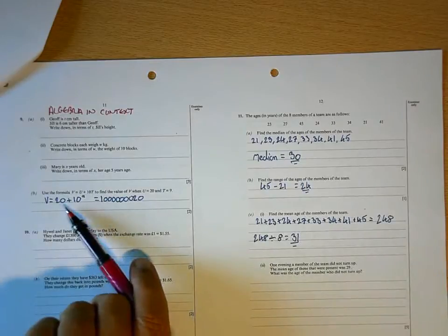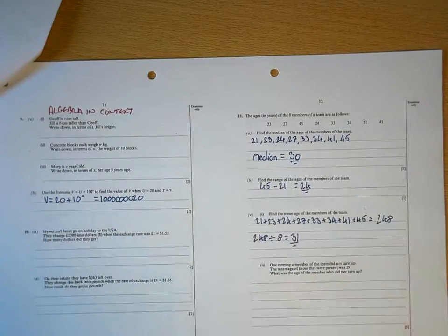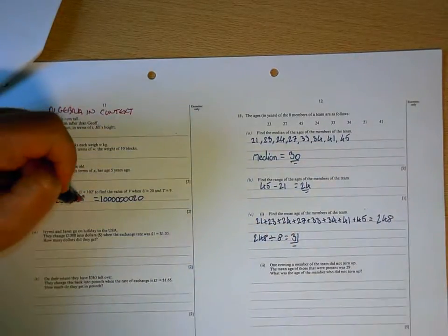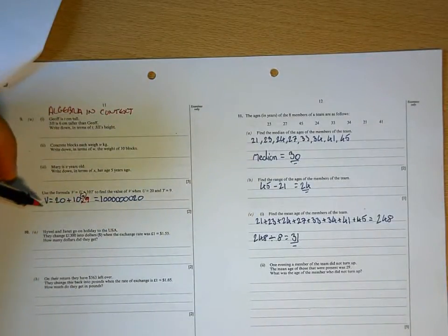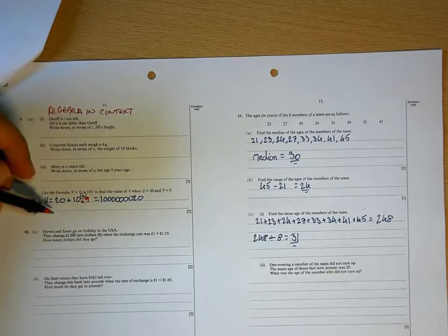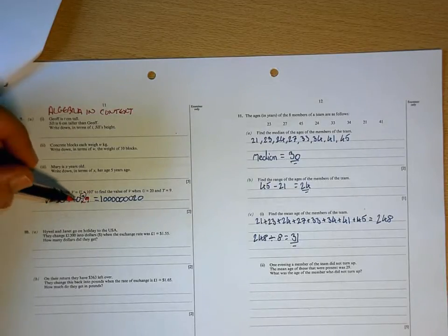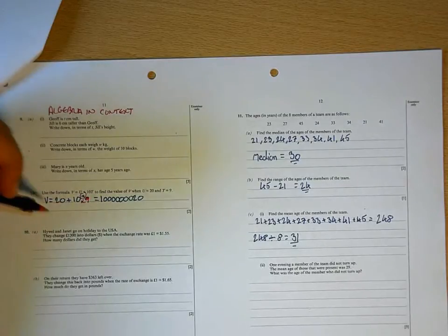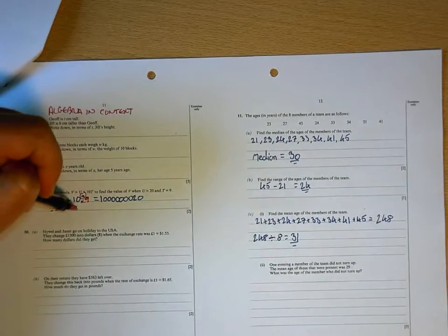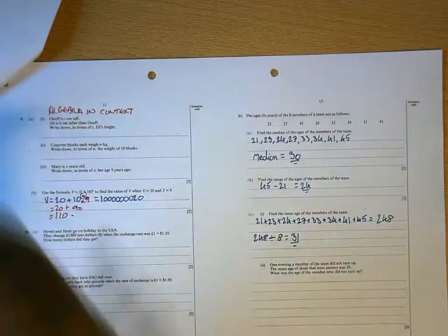This is 20 plus 10, not to the power of 9 but times 9. Okay, and then when you're working out combined arithmetic like that using BODMAS, the multiply M always comes before the add, so that would then be 20 plus 90 which is 110.